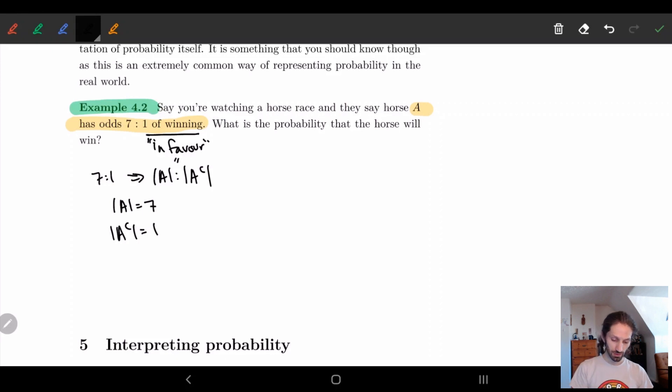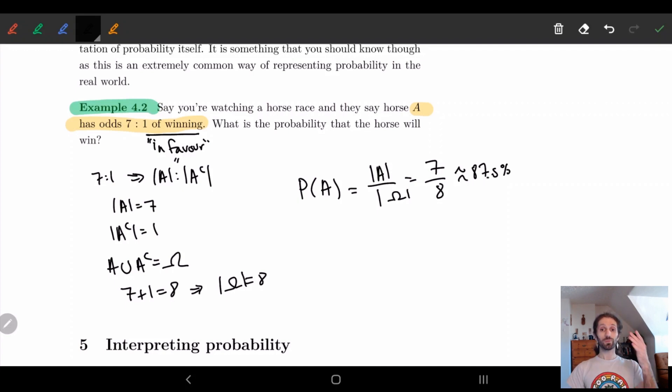Now if we think about this, A with A complement is just all of omega. So if we add these up, seven plus one equals eight, so the size of omega is equal to 8. The probability of A is given by the size of A divided by the size of omega, which is seven divided by eight. So we roughly get an 87.5% chance of winning.